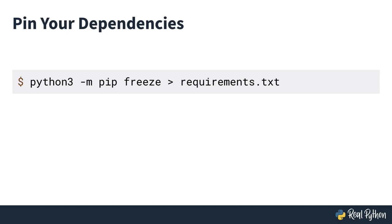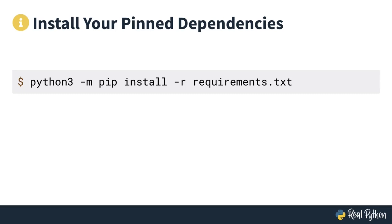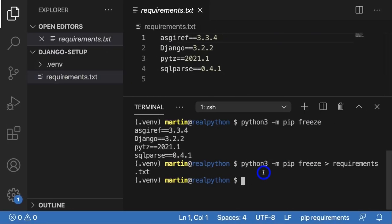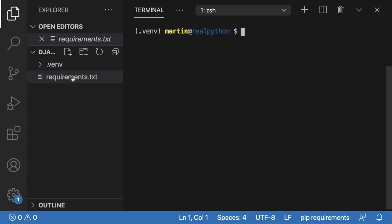In the previous lesson you learned how to pin your dependencies and why you'd want to keep track of specific versions. In this lesson, you're going to learn how to install your pinned dependencies. The command is `python3 -m pip install -r requirements.txt` — similar to installing Django, but instead of specifying the name Django, you say read from the requirements file using `-r` and then pass the filename, which by default is `requirements.txt`.